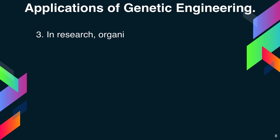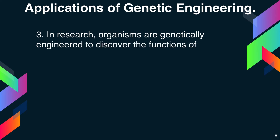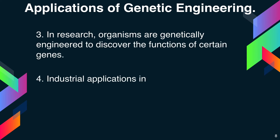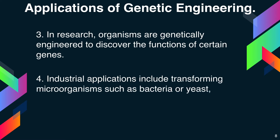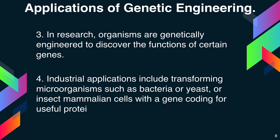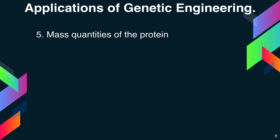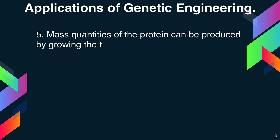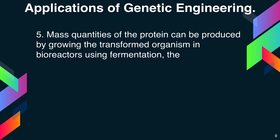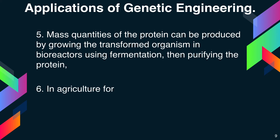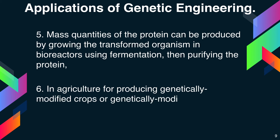In research, organisms are genetically engineered to discover the functions of certain genes. Industrial applications include transforming microorganisms such as bacteria, yeast, or insect cells with a gene coding for a useful protein, then producing mass quantities by growing the transformed organisms in bioreactors using fermentation and purifying the protein. In agriculture, genetic engineering is used for producing genetically modified crops or genetically modified organisms.